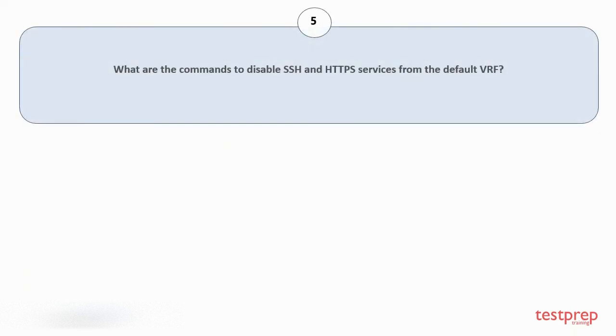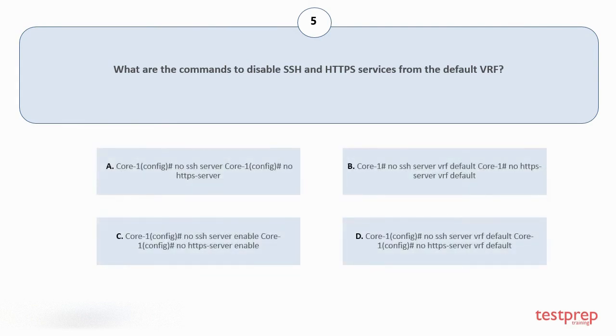Question number 5, What are the commands to disable SSH and HTTPS services from the default VRF? The correct answer is option d.